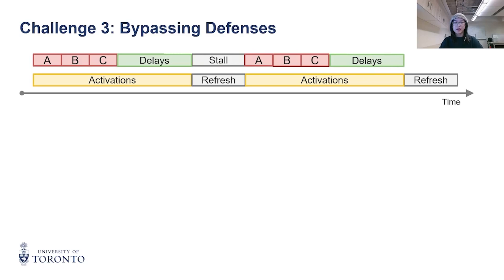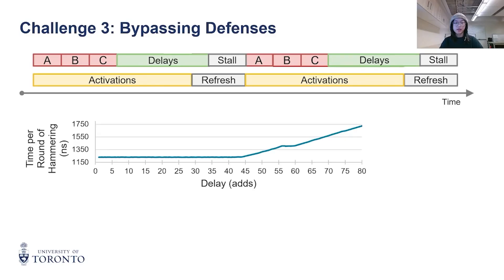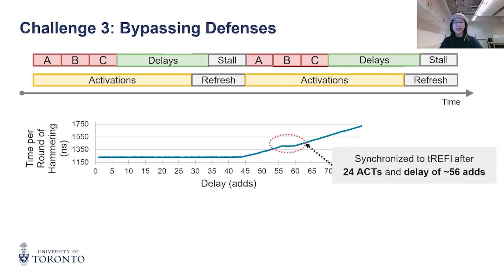However, since TRR refreshes stall the memory, if the additional delay overlaps with the refresh latency, then the total time plateaus instead of increasing. So when we observe that increasing the delay no longer increases the time per round — as seen around 56 additions here — it indicates that the hammering is aligned with the TRR interval.